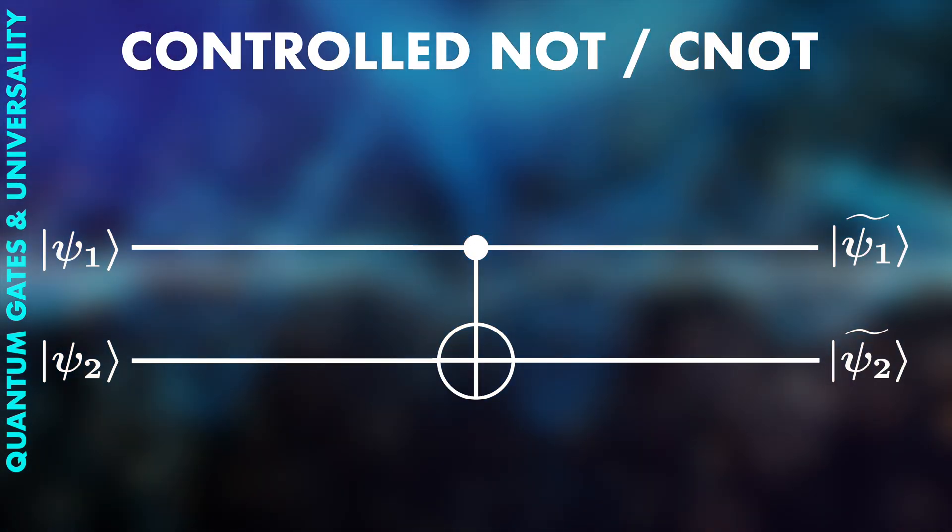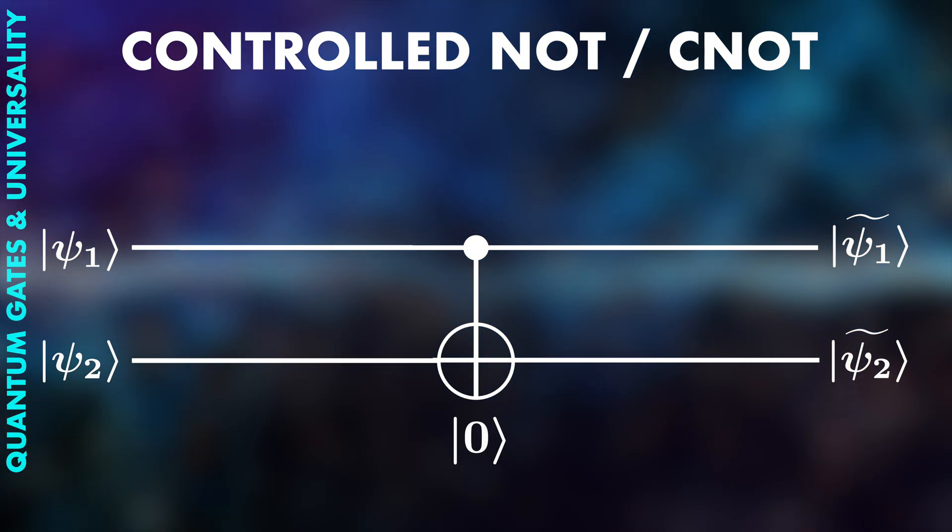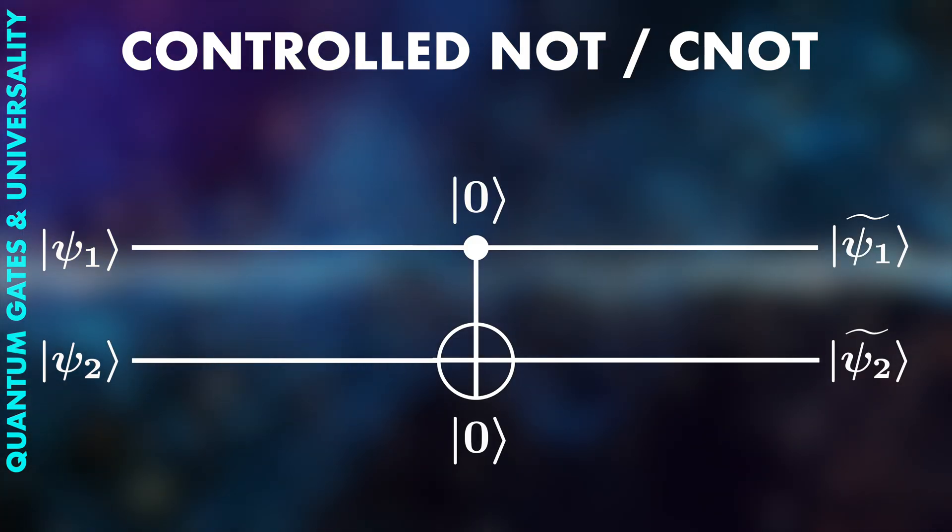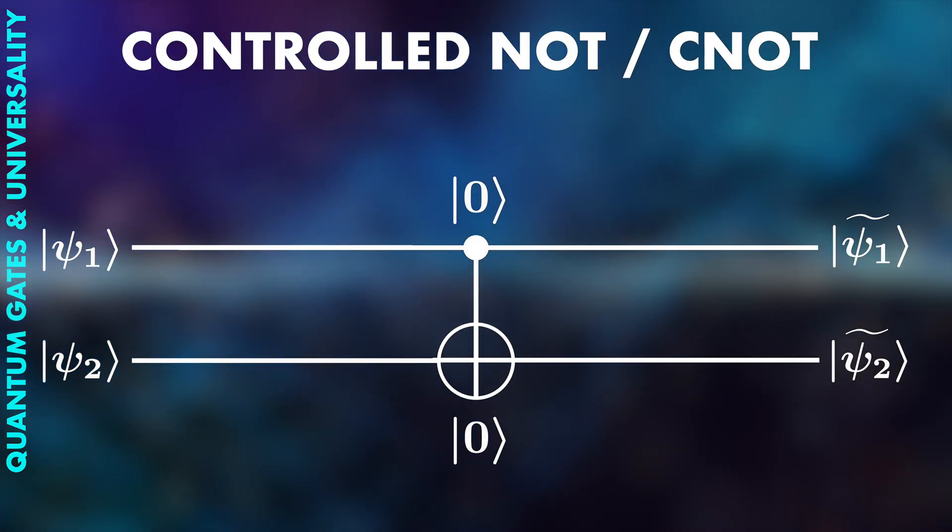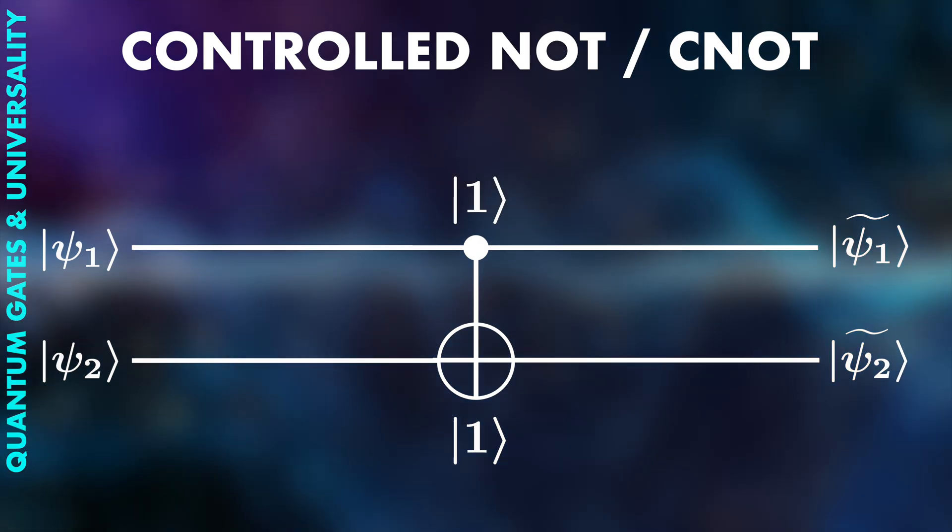A good example is the controlled NOT or CNOT operation. If the trigger qubit is 0, nothing happens. But if the trigger qubit is 1, the target qubit is flipped.